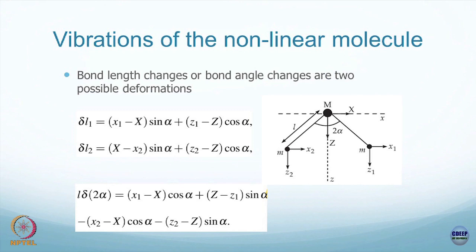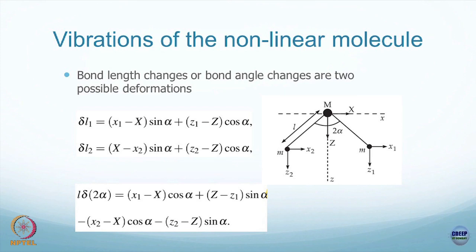How does bond length change? δL₁ is the change in bond length between capital M and small m for atom 1, and δL₂ is the change for atom 2 with coordinates x₂, z₂ and the central atom. There is also the rotational constraint. This is given explicitly in the Landau-Lifshitz Mechanics book — I am only giving the final equations here; anyone interested in deriving these steps should go back and look at Landau-Lifshitz.